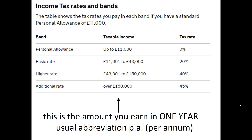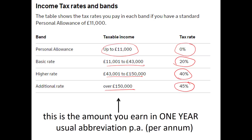It rather depends on how much people earn. Up to £11,000, you don't pay any tax at all. Between £11,000 and £43,000, the rate is 20%. From £43,000 to £150,000, it's 40%. Over £150,000, it's 45%. So there are four different tax rates applying to different tax bands. Two very important ideas: tax rates and tax bands. And we are always referring to annual income levels here — all those figures are the amount you earn in one year, usually abbreviated as PA, short for per annum.